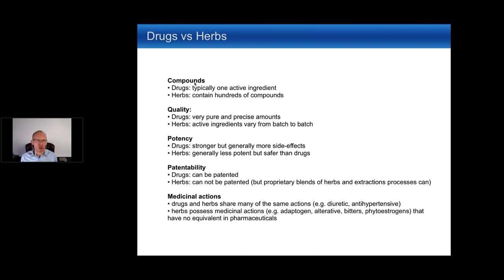Although herbs and drugs share many actions — diuretic, anti-inflammatory, antihypertensive — herbs have some actions unique to herbal medicine. These include adaptogens, which help the body cope with stress; alteratives, used to cleanse the blood and normalize body function; bitters, which promote digestion; and phytoestrogens, which balance hormones. These terms typically don't exist in the pharmaceutical world.